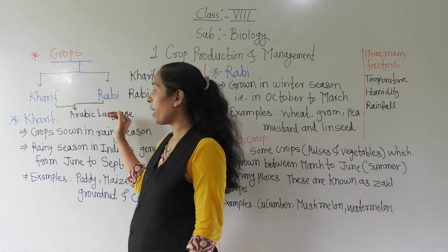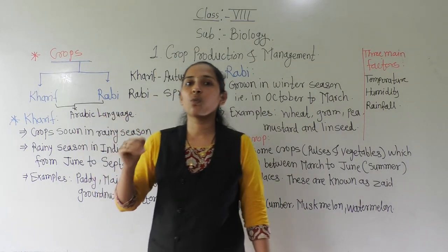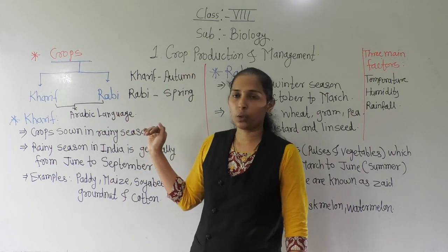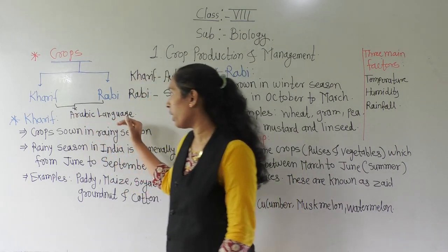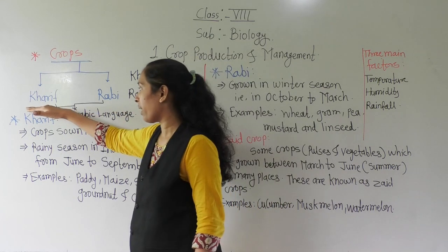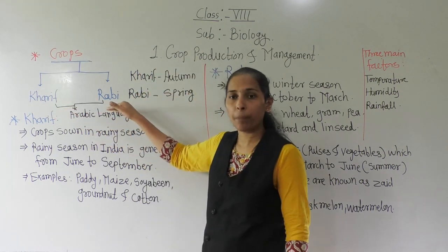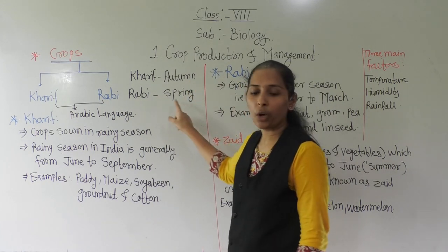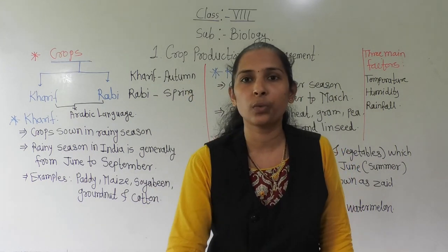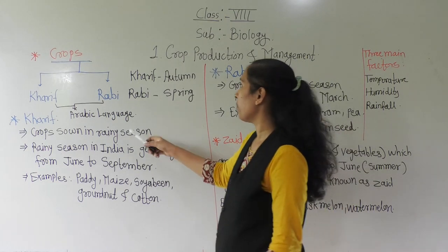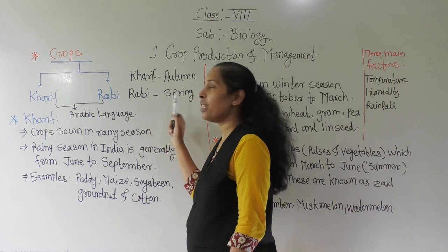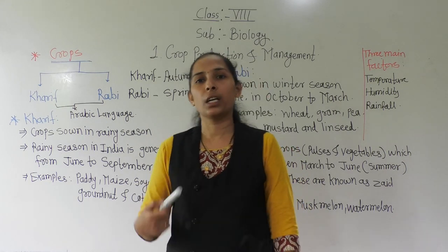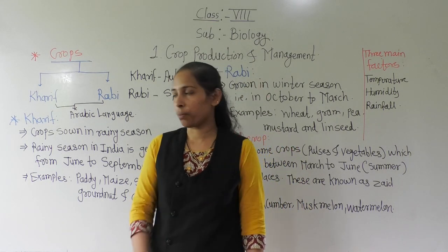The words 'kharif' and 'rabi' come from the Arabic language. Kharif means 'autumn' while rabi means 'spring.' So kharif means autumn and rabi means spring. Let us now look at kharif crops and rabi crops in detail.